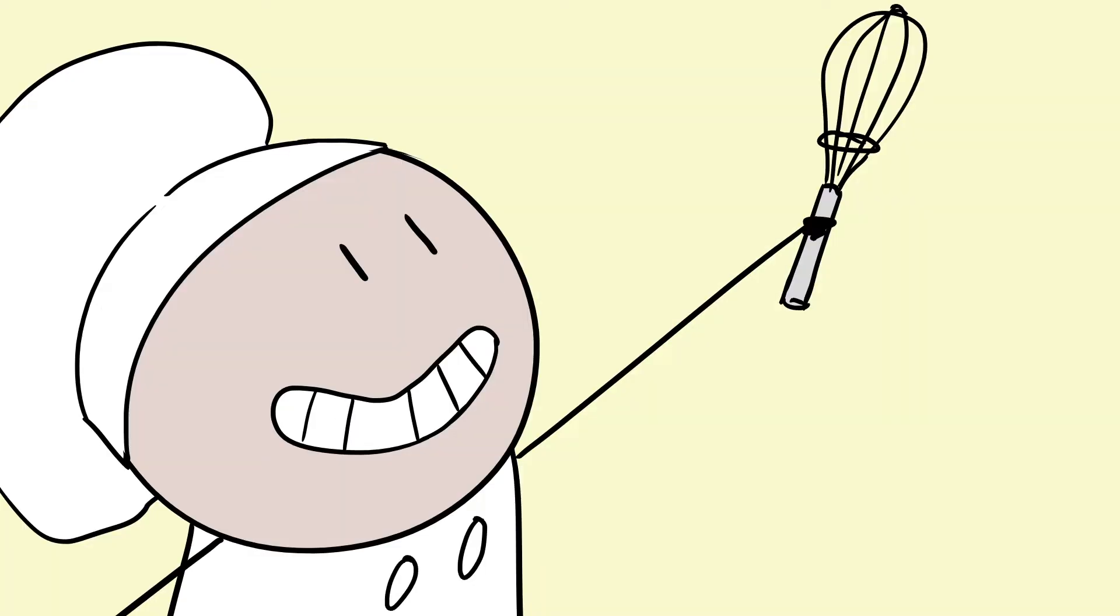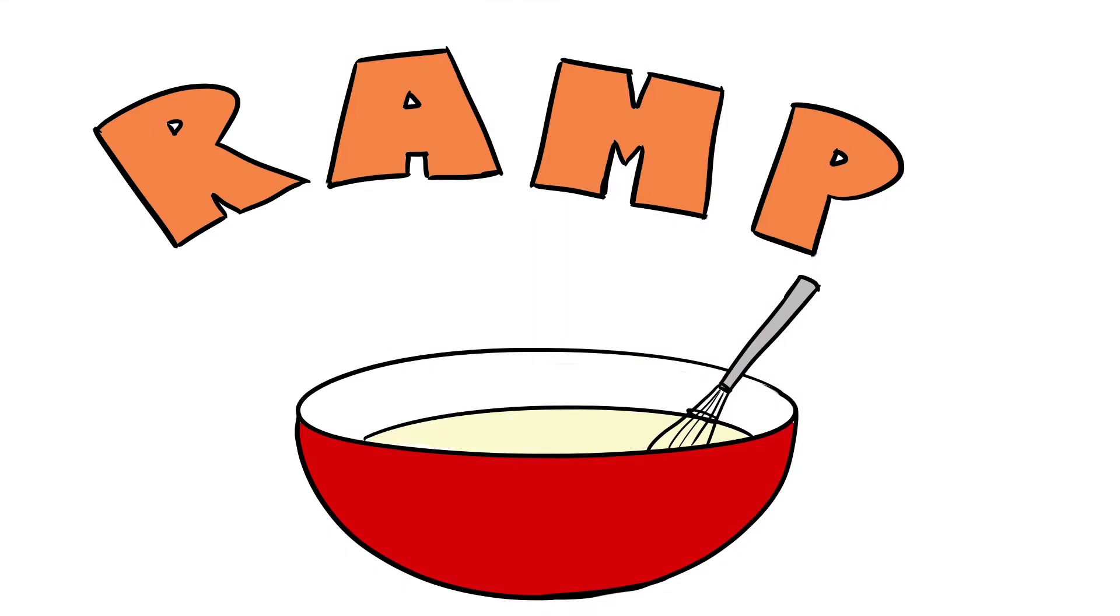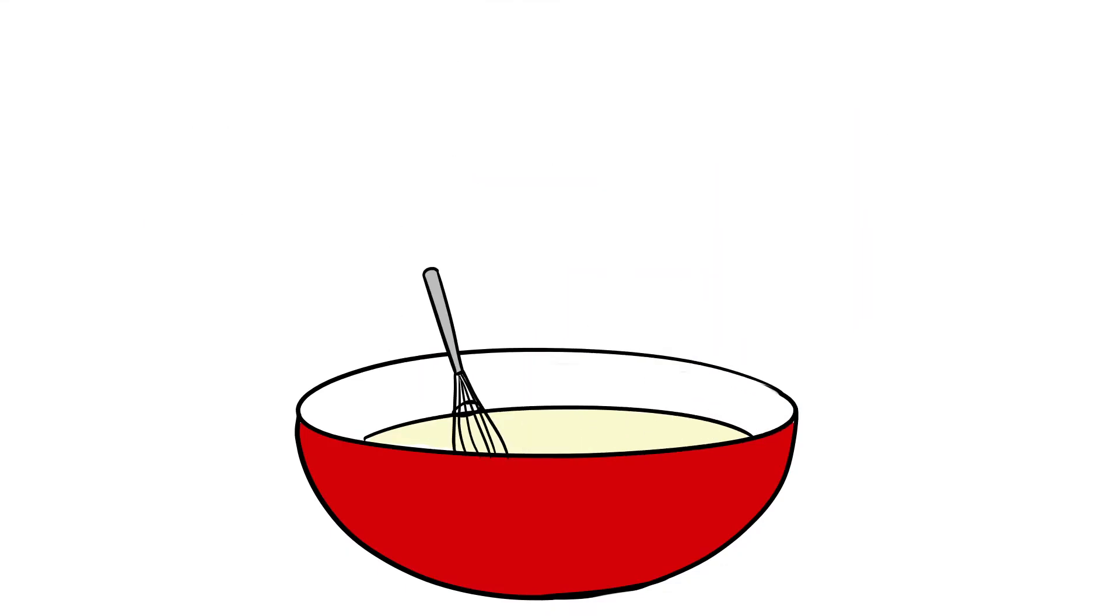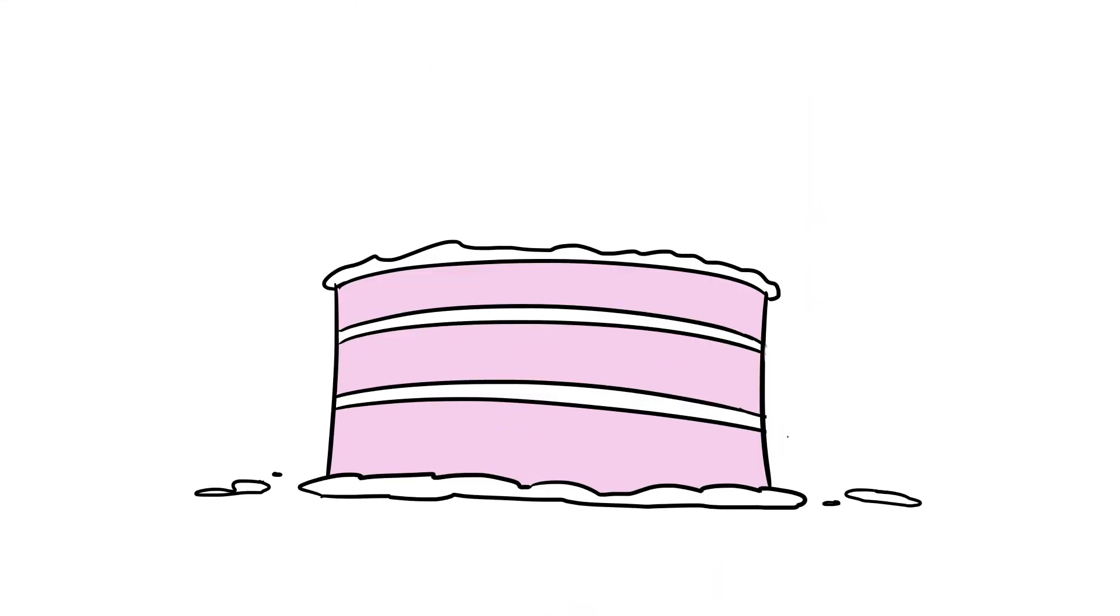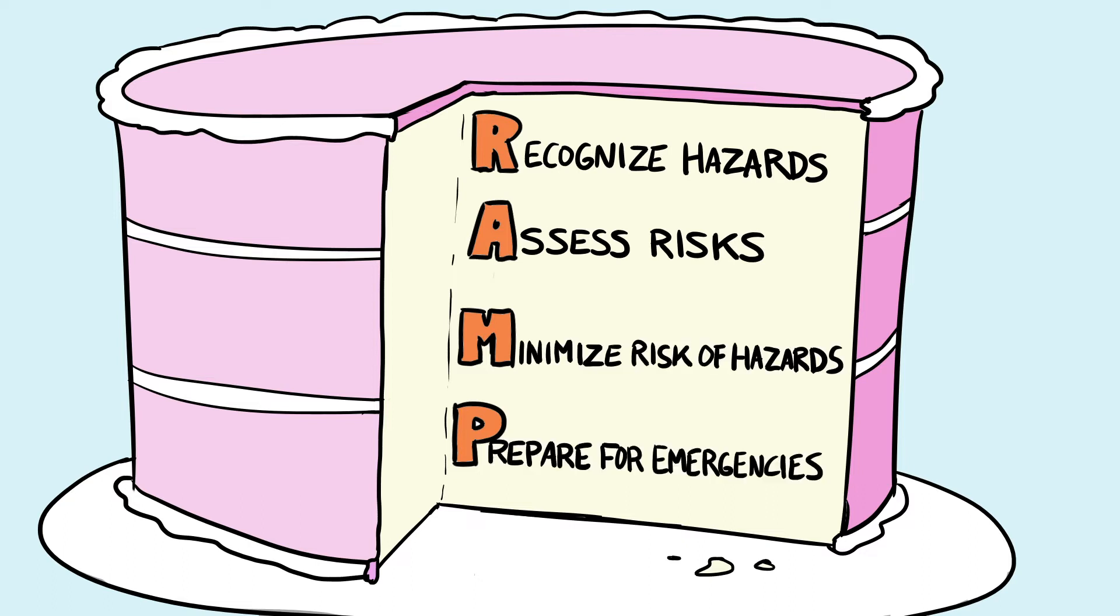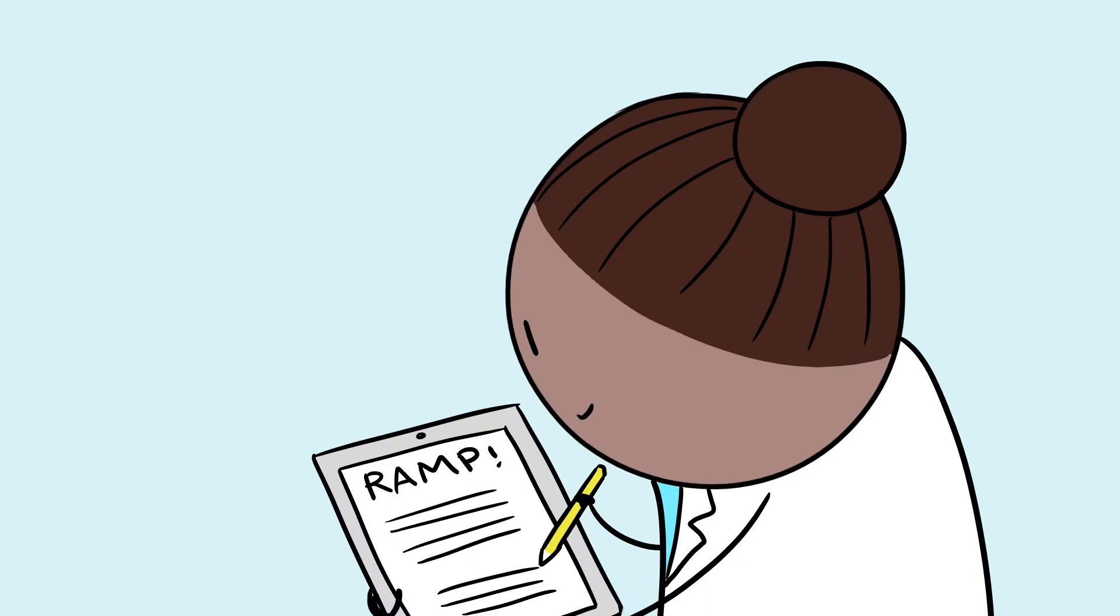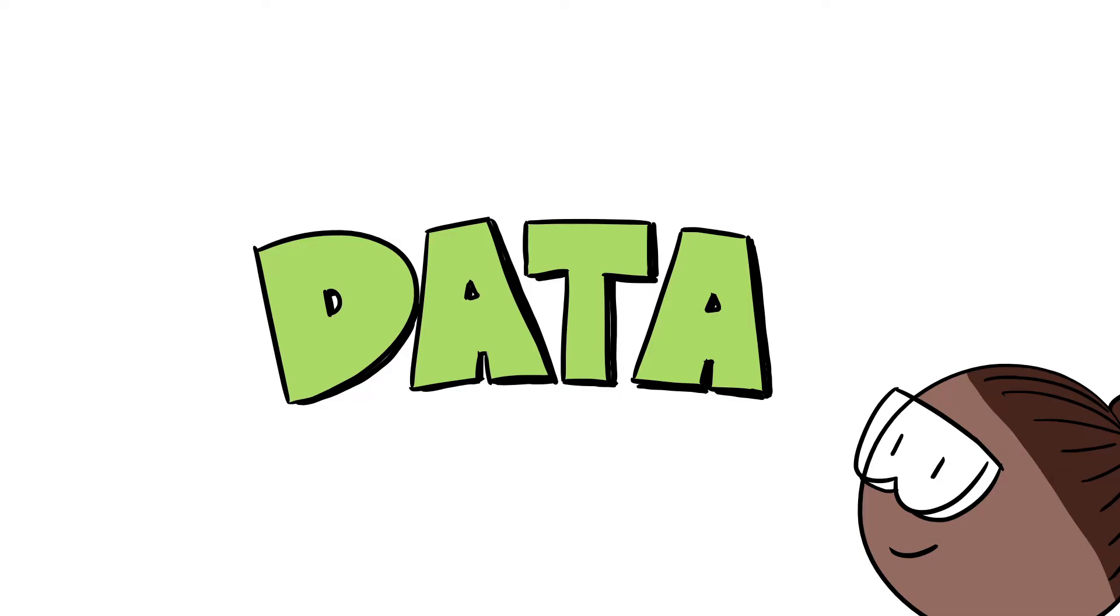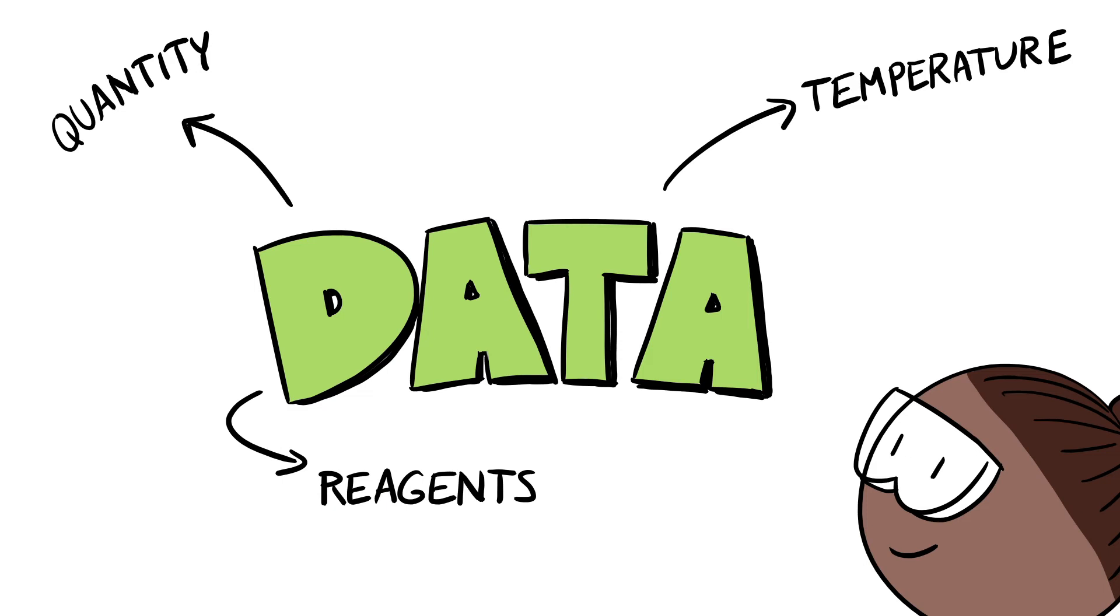Then it's time to mix your batter by combining the data you found into a risk assessment that describes your safety precautions built around the RAMP template. RAMP guides you to recognize hazards, assess risks, minimize the risks of hazards, and prepare for emergencies. Do a full risk analysis using your chemical properties and data and thinking critically about how that data interacts with your specific process and variables.